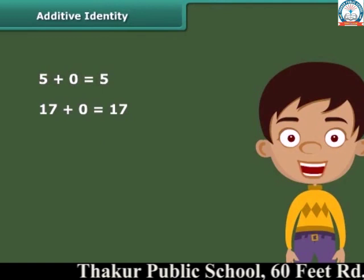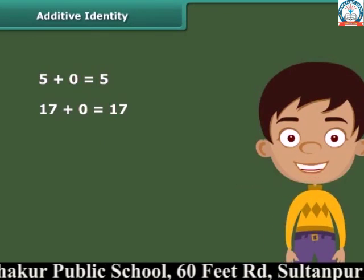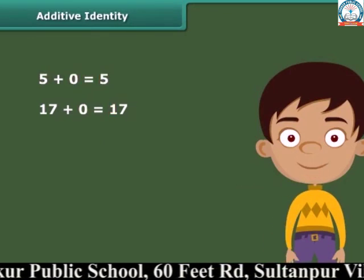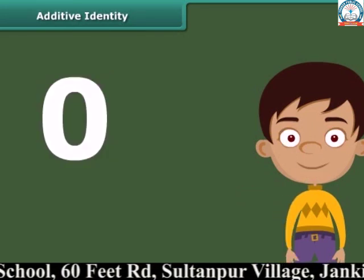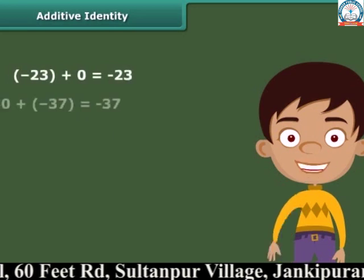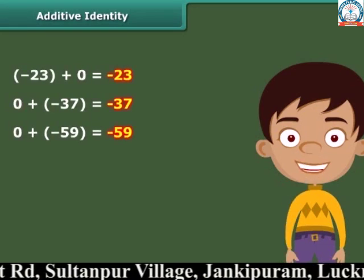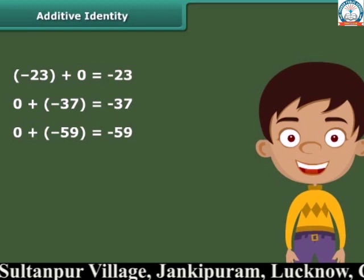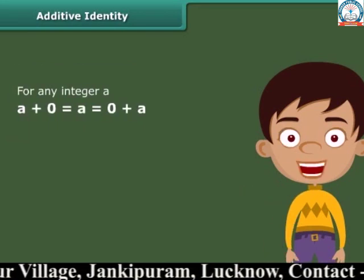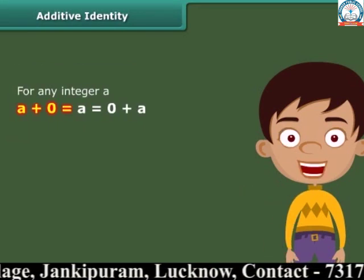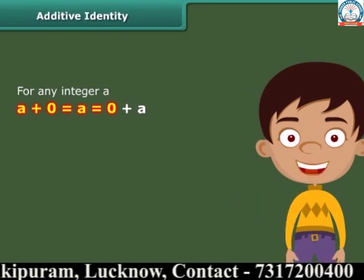When we add zero to any whole number, we get the same whole number. Zero is an additive identity for whole numbers. Similarly, if we add zero to any integer, we get the same integer. In general, for any integer A, A plus zero is equal to A, which equals zero plus A.